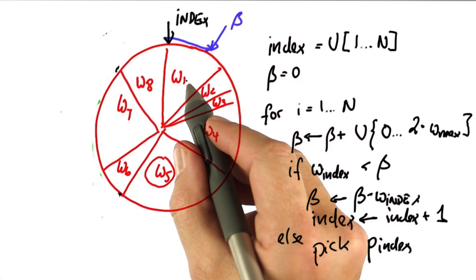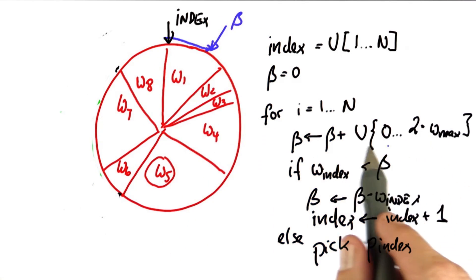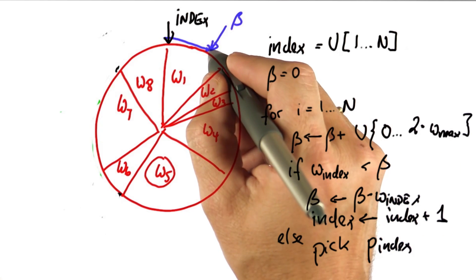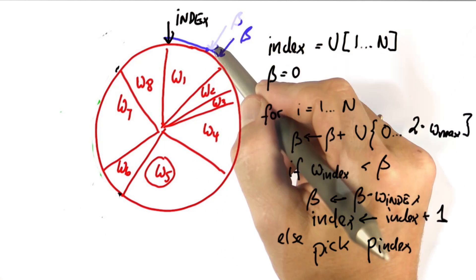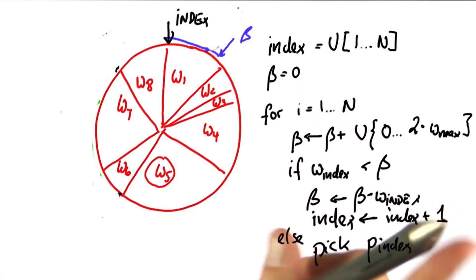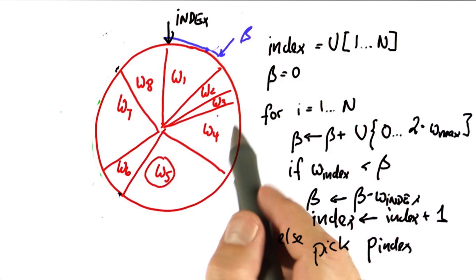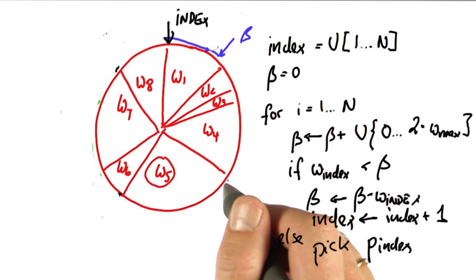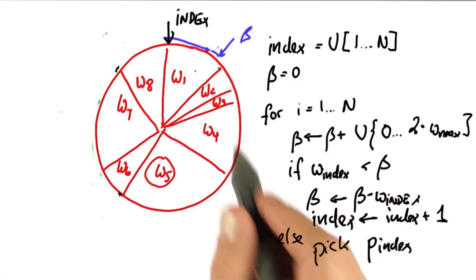...and particle 1 is picked. It can easily happen that the uniform value is so small that the same particle is picked twice, and it's easy to see that each particle is now picked in proportion to the total circumference it spans in this wheel of particles.